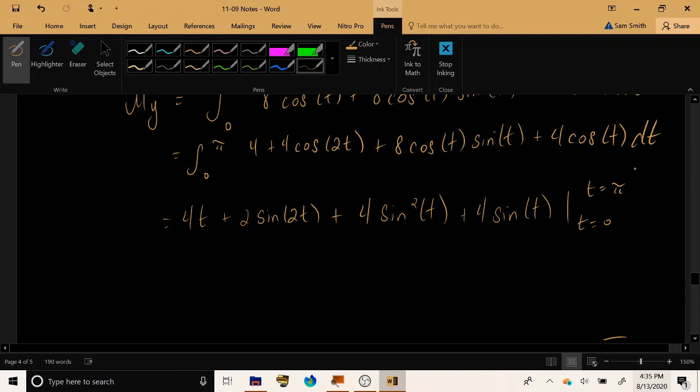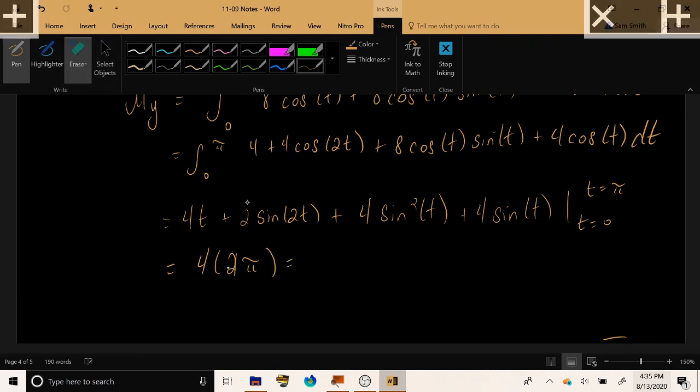Now, every single one of these sine terms is going to vanish when t is equal to pi and it's going to vanish when t is equal to 0. So, the only quantity that survives for the moment around the y axis is 4 times t equals pi, which is 4 pi.